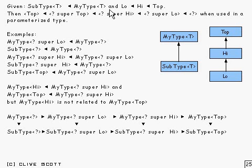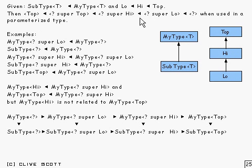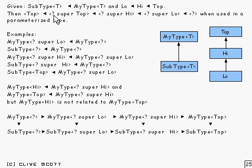Let's have a look at all this sort of thing super algebraically. Here we're given a subtype of T being a subtype of MyType of T — two generic types. We're given low, high, and top arranged in a hierarchy. When dealing with parameterized types, something which is super high is going to be a subtype of something which is super low, because super high is everything up there, while super low includes everything up there, which obviously includes high. And super null type would be the whole lot.